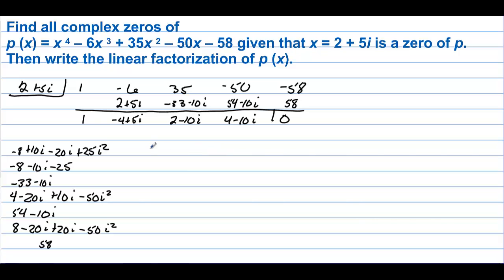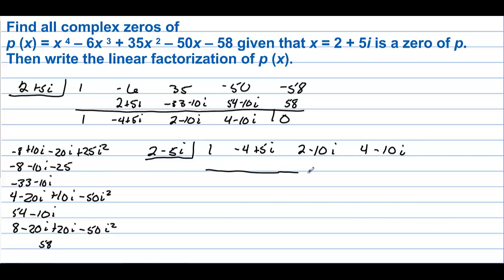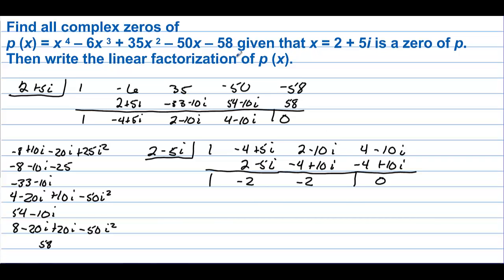Since 2 plus 5i is a zero, 2 minus 5i must also be a zero. We run synthetic division again with 2 minus 5i. Bring down the 1, multiply by (2 minus 5i): those terms cancel nicely, giving negative 2. Then negative 4 plus 10i — working through the steps, the remainder is 0, confirming 2 minus 5i is a zero. We're left with x squared minus 2x minus 2.